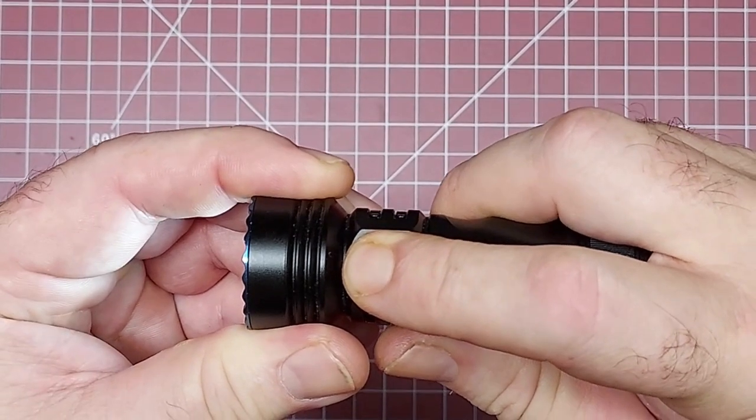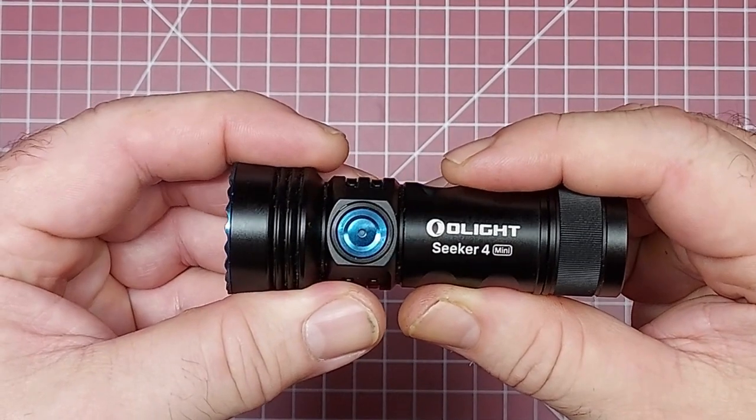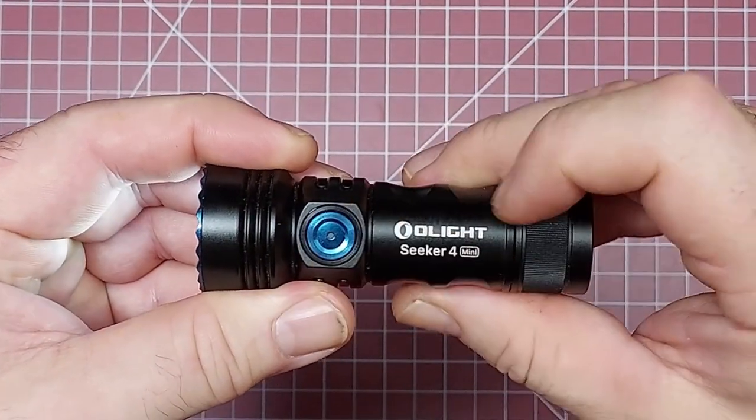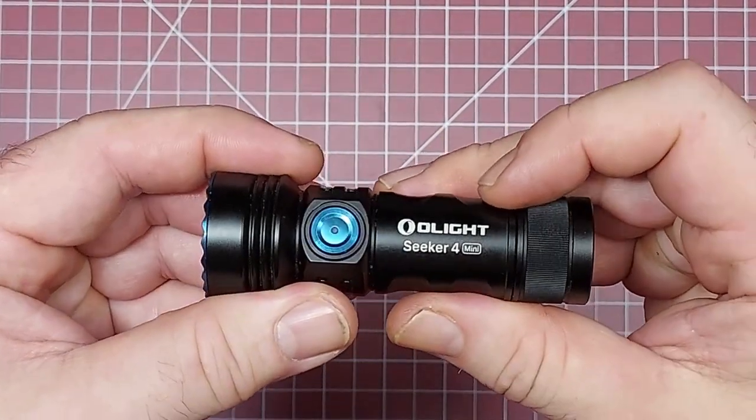So there, to lock it out, I'm going to hold it down for two seconds again. You can see the red indicator light shows that it is locked. Two seconds: moonlight mode, low, medium, high, and you can see...